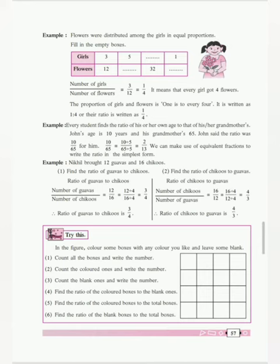Therefore, ratio of chikus to guava is equal to number of chikus upon number of guavas is equal to 16 upon 12.